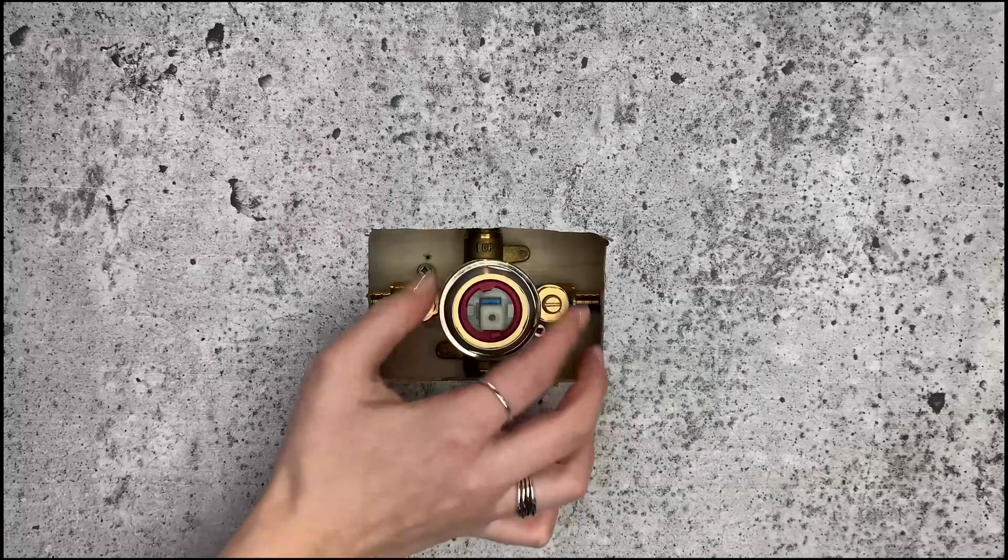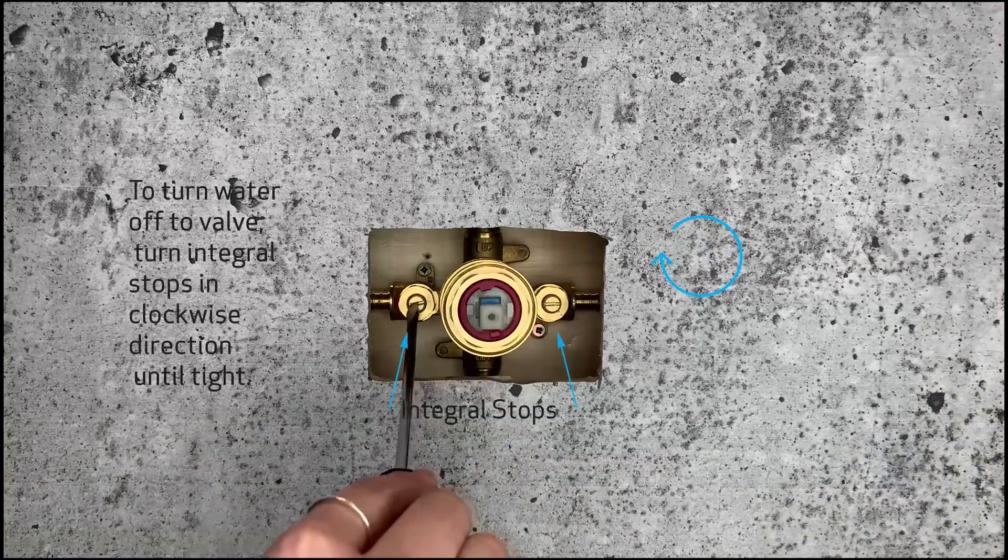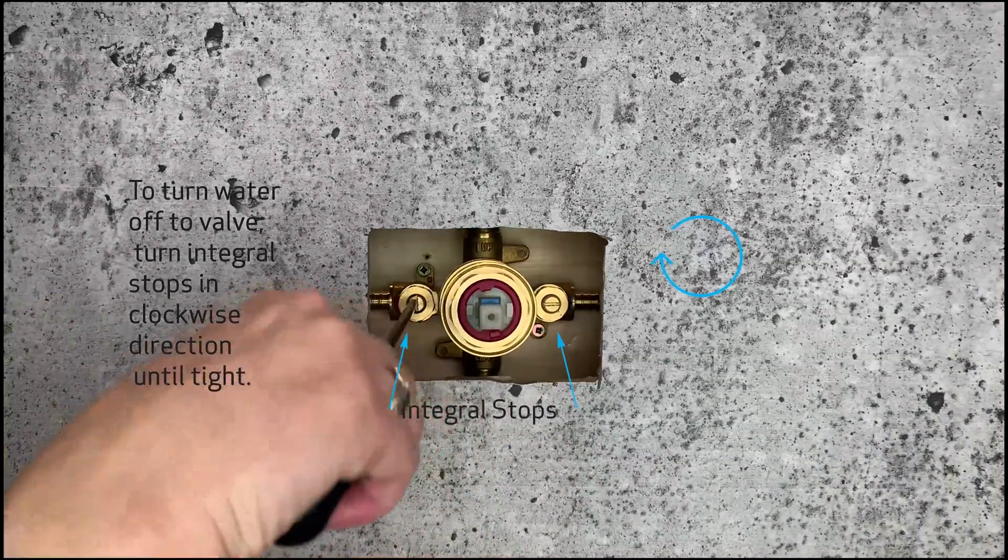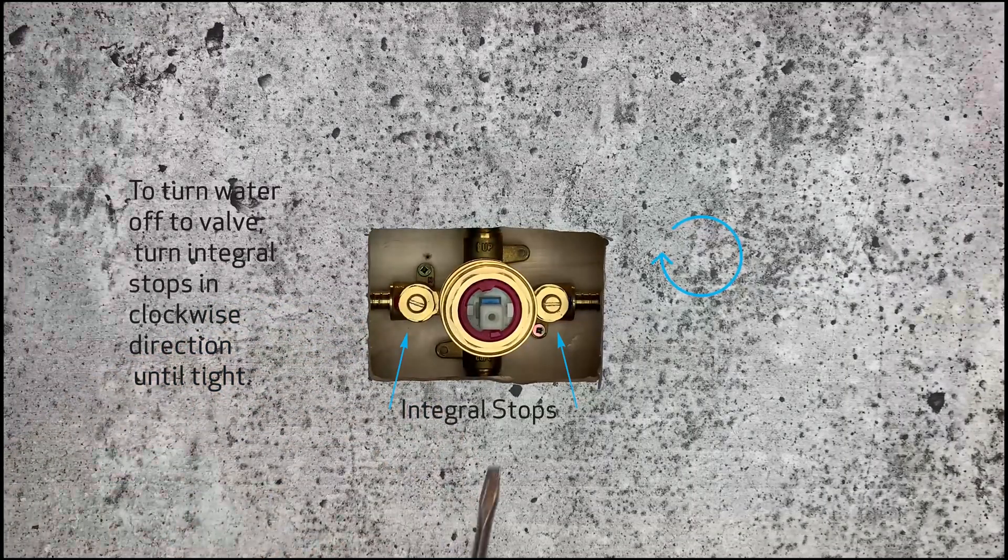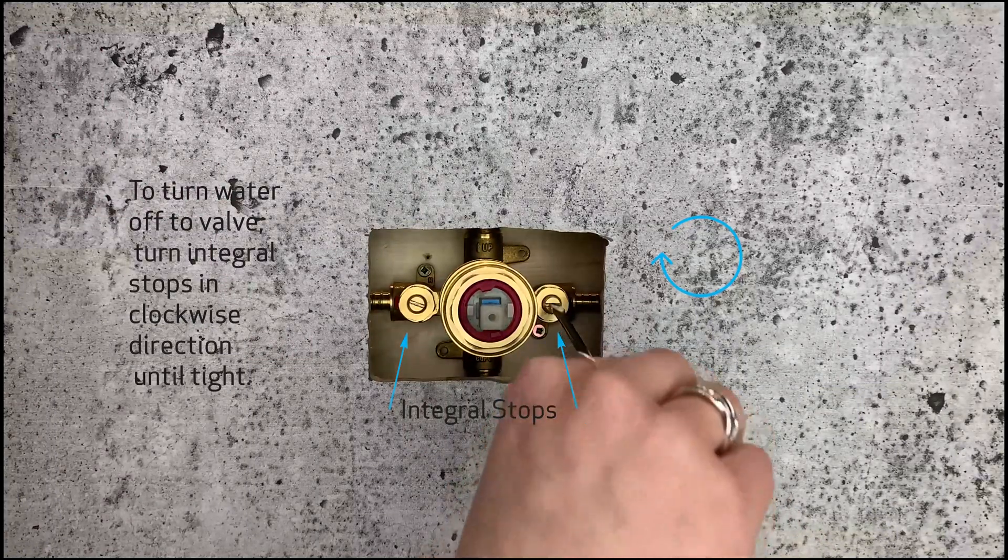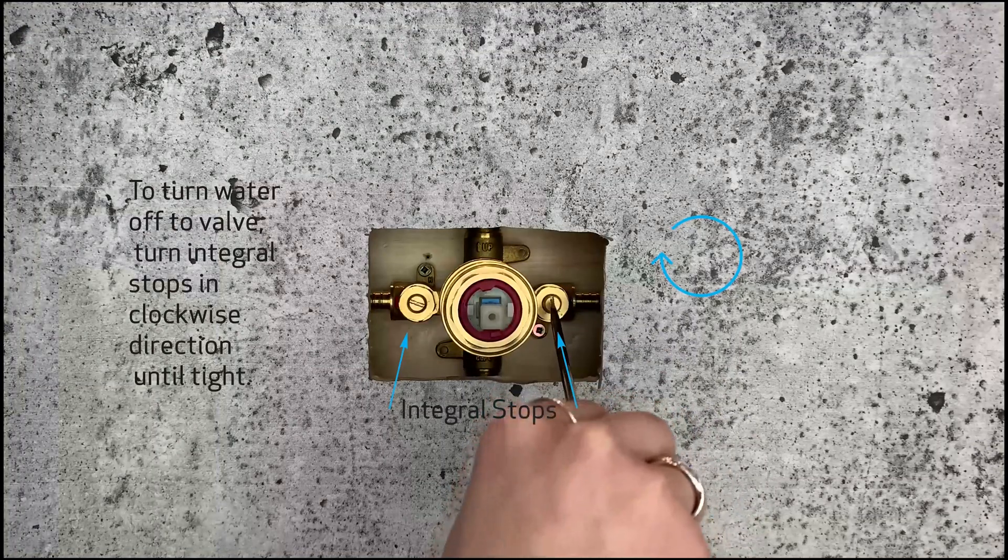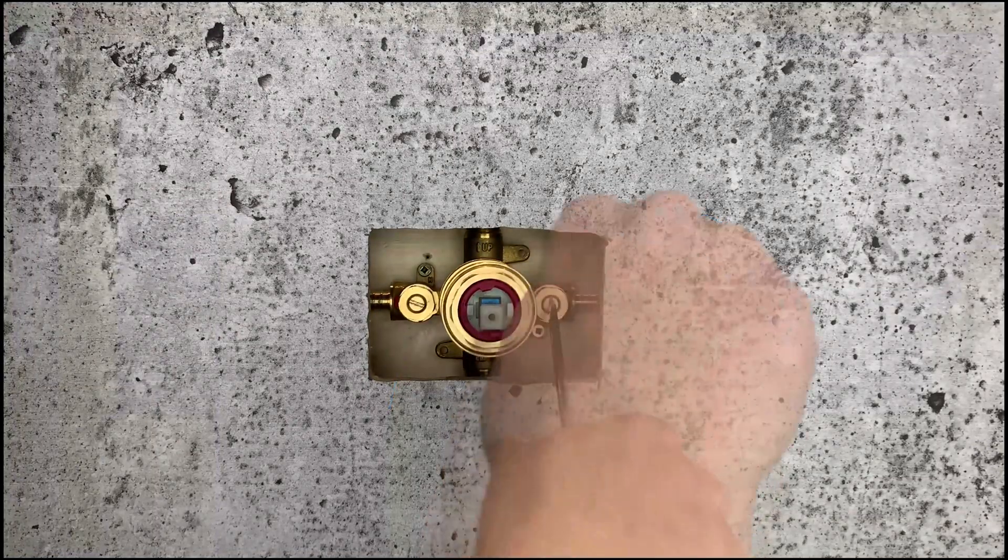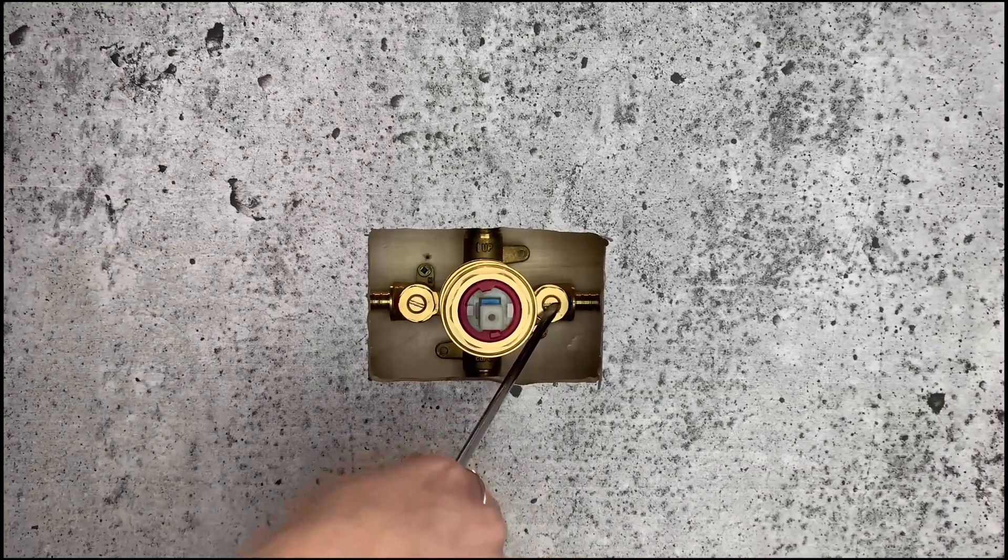You can now see the cartridge. Unscrew and remove the decorative ring and remove the collar. The screws that are situated on either side of the cartridge are the integral stops that control water to your valve. To turn off the water to the valve, you will need to turn the integral stops in a clockwise direction until tight. Make sure to turn both stops off. One controls the incoming hot water and the other controls the cold water supply.